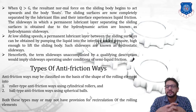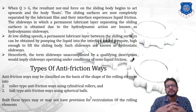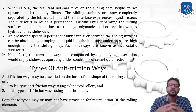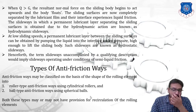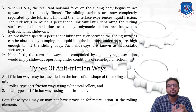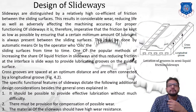Next are the types of anti-friction ways. Anti-friction ways may be classified on the basis of the shape of the rolling elements into two types: first, roller-type anti-friction ways using cylindrical rollers, and second, ball-type anti-friction ways using spherical balls. Both types may or may not have a provision for recirculation of the rolling elements. In a ball bearing type, rolling contact is maintained; similarly, in roller type, line contact is maintained between the two contacting surfaces.